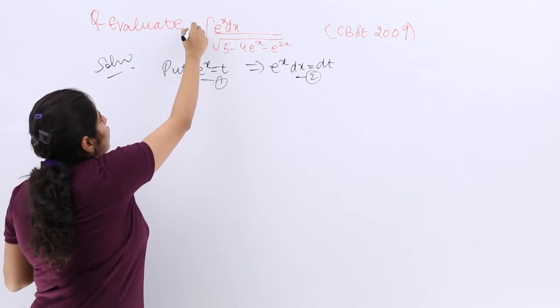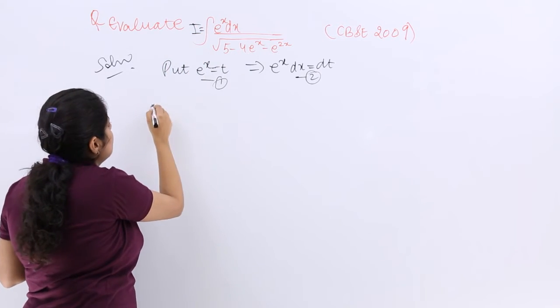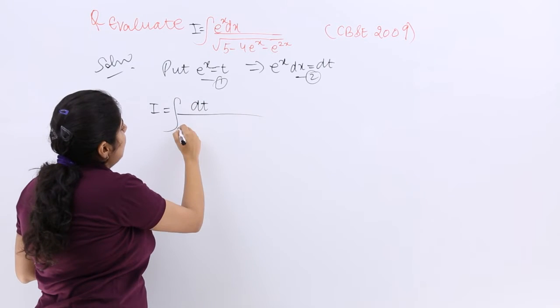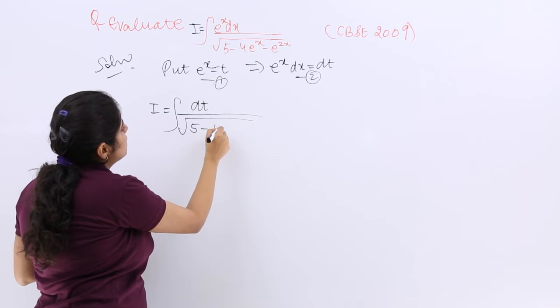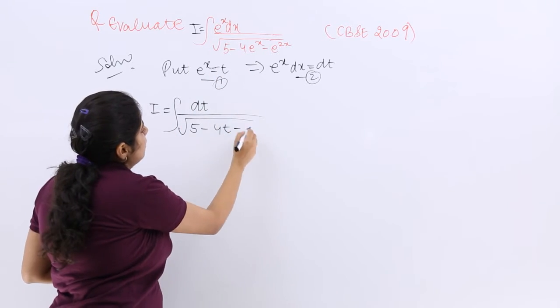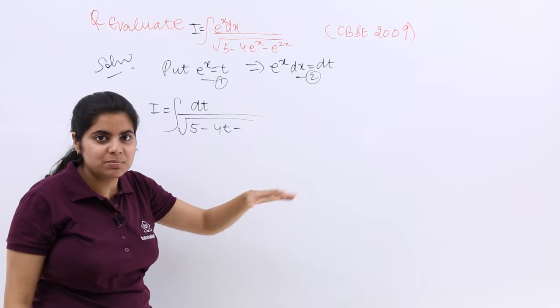Now what is my question? The question is I and it has been changed. So dt is the numerator under root 5 minus 4e raised to the power x is t minus e raised to the power 2x means t square.